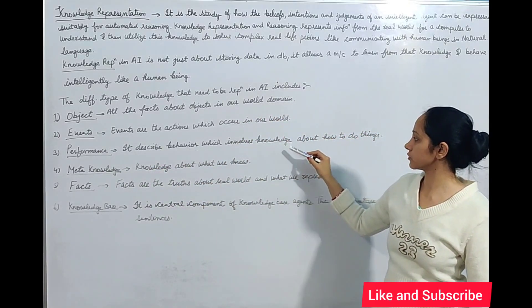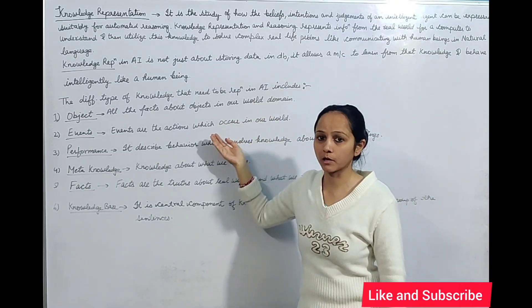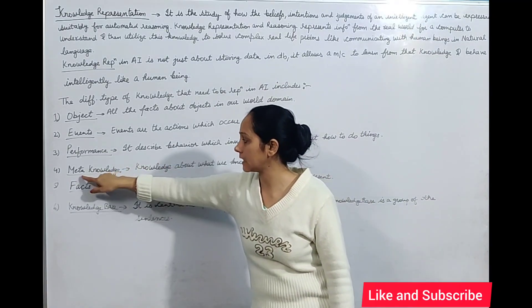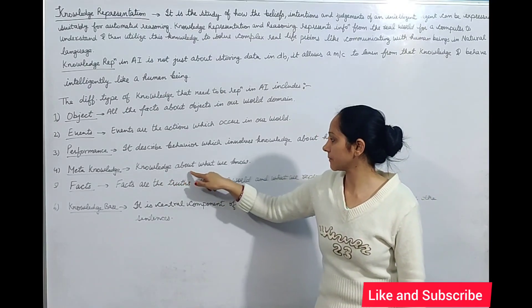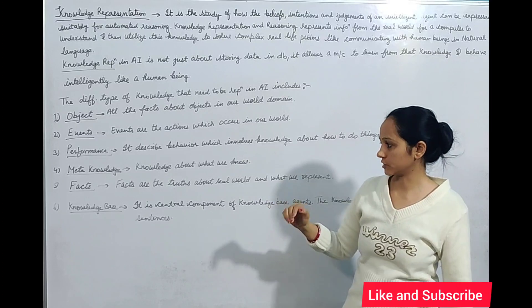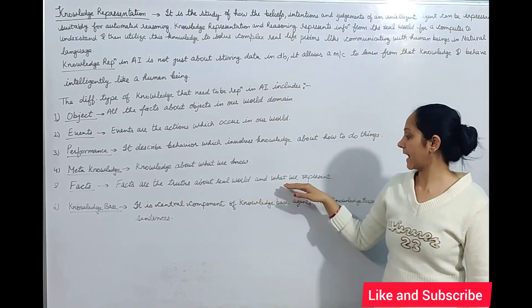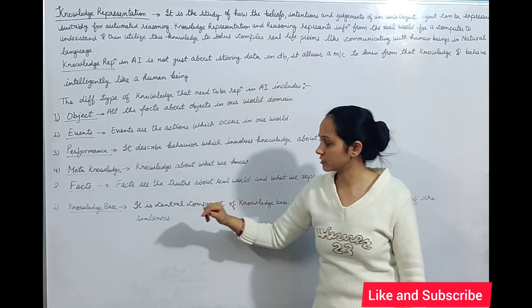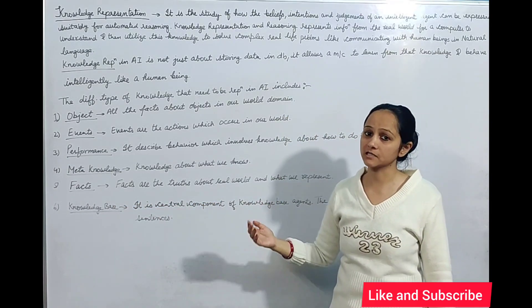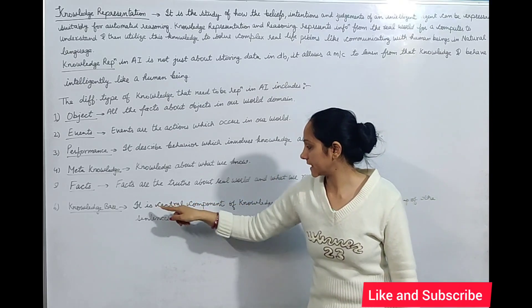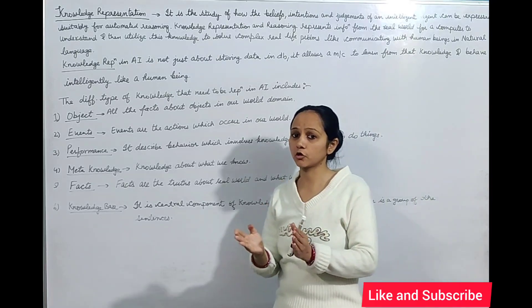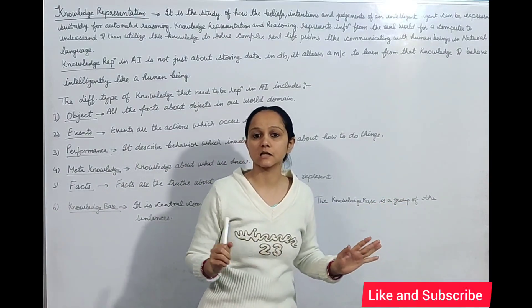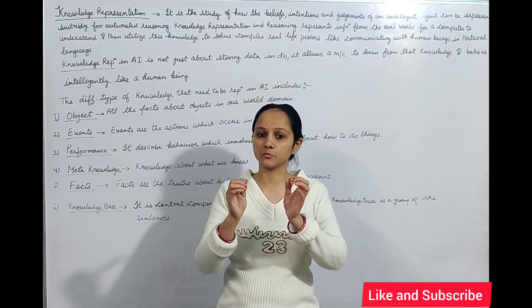Performance describes behavior involving knowledge about how to do things — it covers how we will perform actions. Meta-knowledge is knowledge about knowledge — what we know about what we know. Facts are the truths about the real world that we represent in real-world scenarios and consider in the knowledge base. The knowledge base is a kind of database where we represent our knowledge; it is a central component of the knowledge-based agent, stored as a group of sentences.